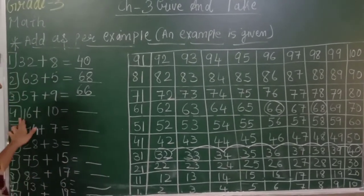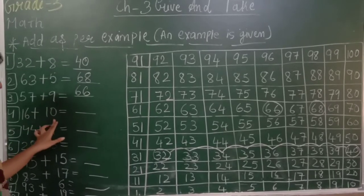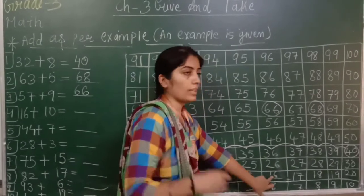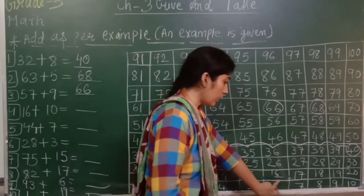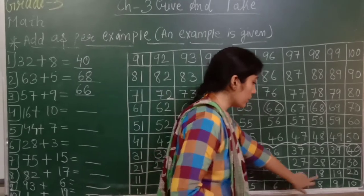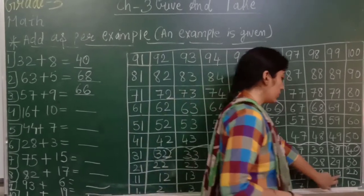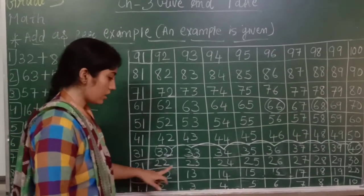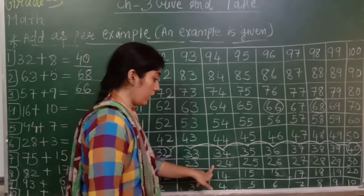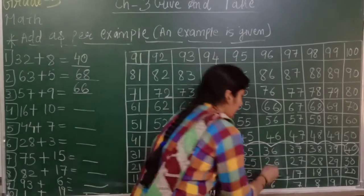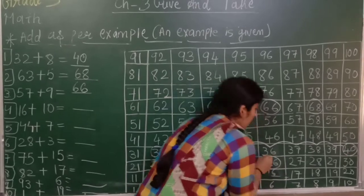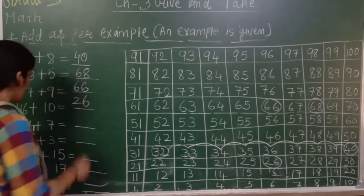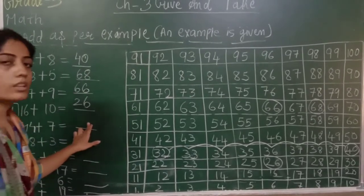Next, fourth number: 16 plus 10. Where is 16? Here. Sixteen pe khaade hoke, humko ten steps chalna hai — ten numbers jump karna hai. One, two, three, four, five, six, seven, eight, nine, ten. That means answer is 26. Toh yahaan likho 26. 16 plus 10 is equal to 26.